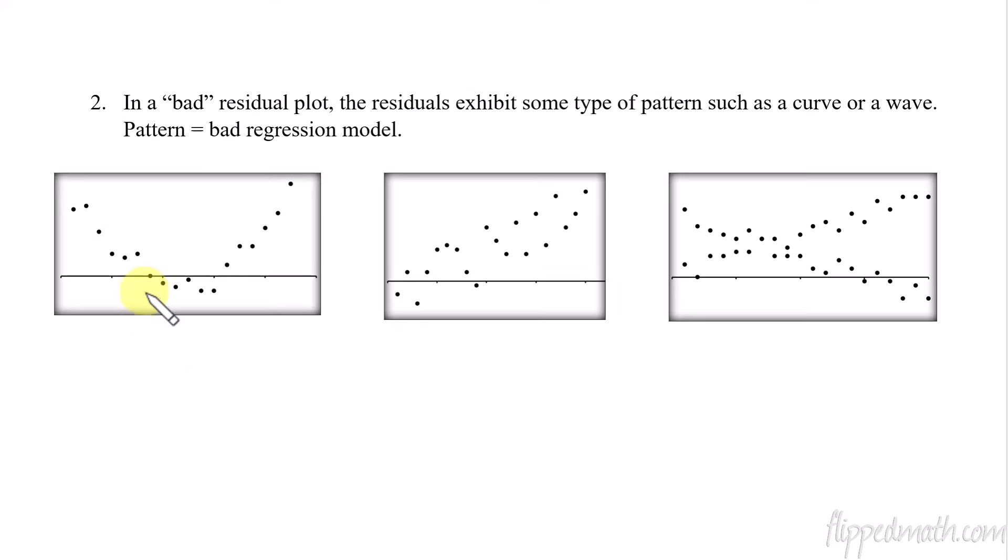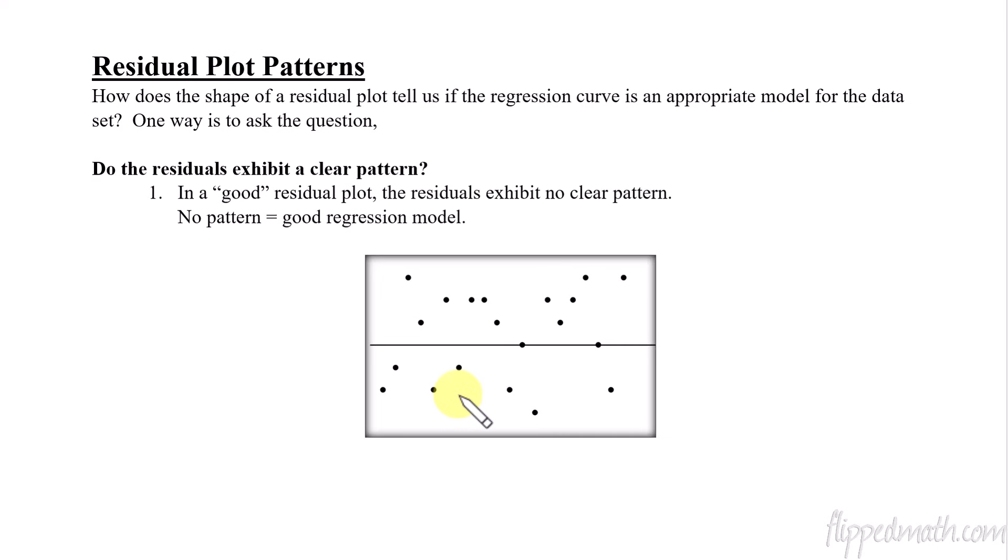Whereas if you have a pattern like these, these have some type of pattern to them. This one's kind of growing up. This one looks like a parabola. This one is kind of some weird X. It's like two lines that are crossing each other. When you have some type of a pattern that the residuals create, then the model that's represented by each one of these is not a good model for the data set. You have a regression model that's not good for the data you're working with. So you'll have a few problems here just identifying which ones are good, which ones are bad, and just saying, okay, yeah, this one's bad. Why is it bad? Because it creates a pattern. This one's good. Why is it good? Because there is no pattern. That's how you talk about that.